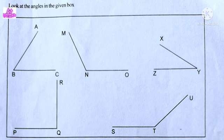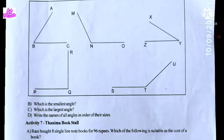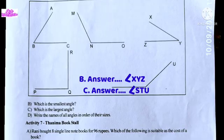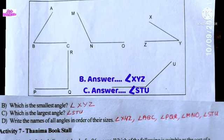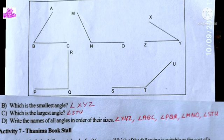The angles given are: Angle ABC, MN, XYZ, PQR, STU — there are 5 angles. Which is the smallest angle? We have to use a set square to determine the smallest angle.